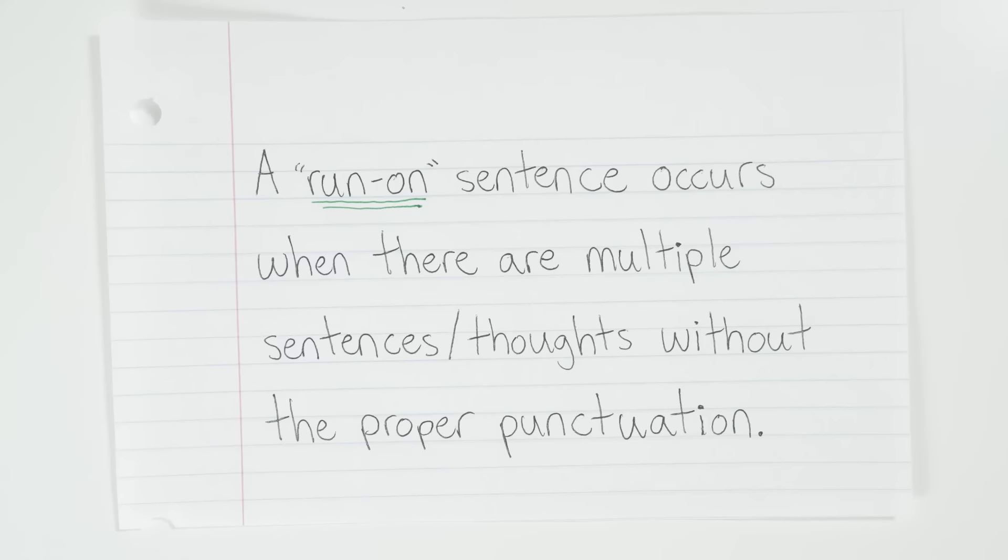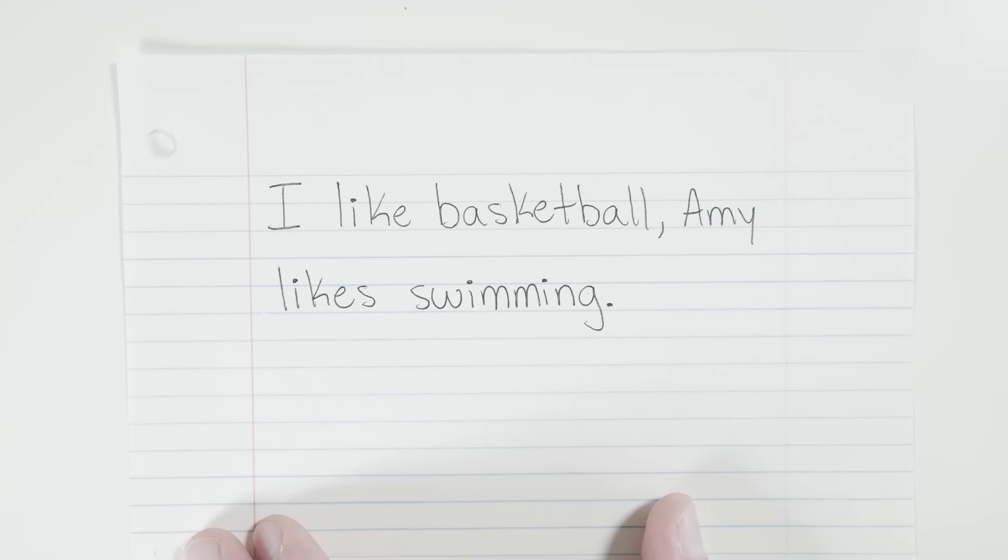A run-on sentence is created when we have the opposite effect. A run-on occurs when we have multiple sentences, multiple complete thoughts, without the proper punctuation, which is usually a period, like this: I like basketball, Amy likes swimming. There are two separate sentences here, I like basketball, and Amy likes swimming.